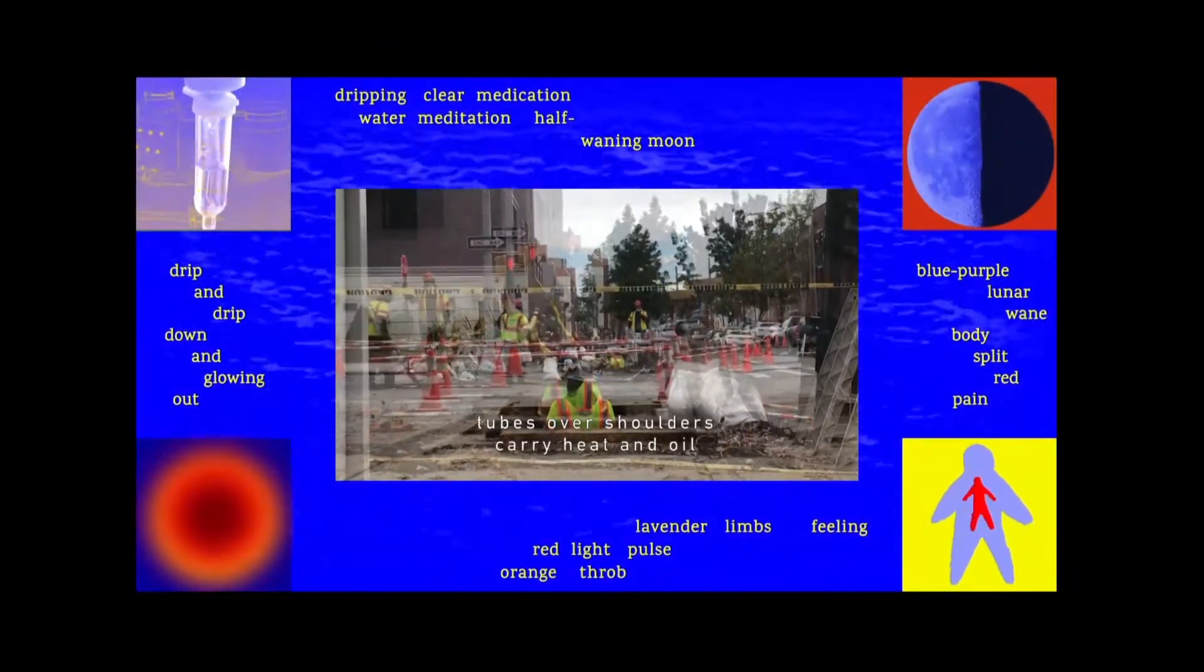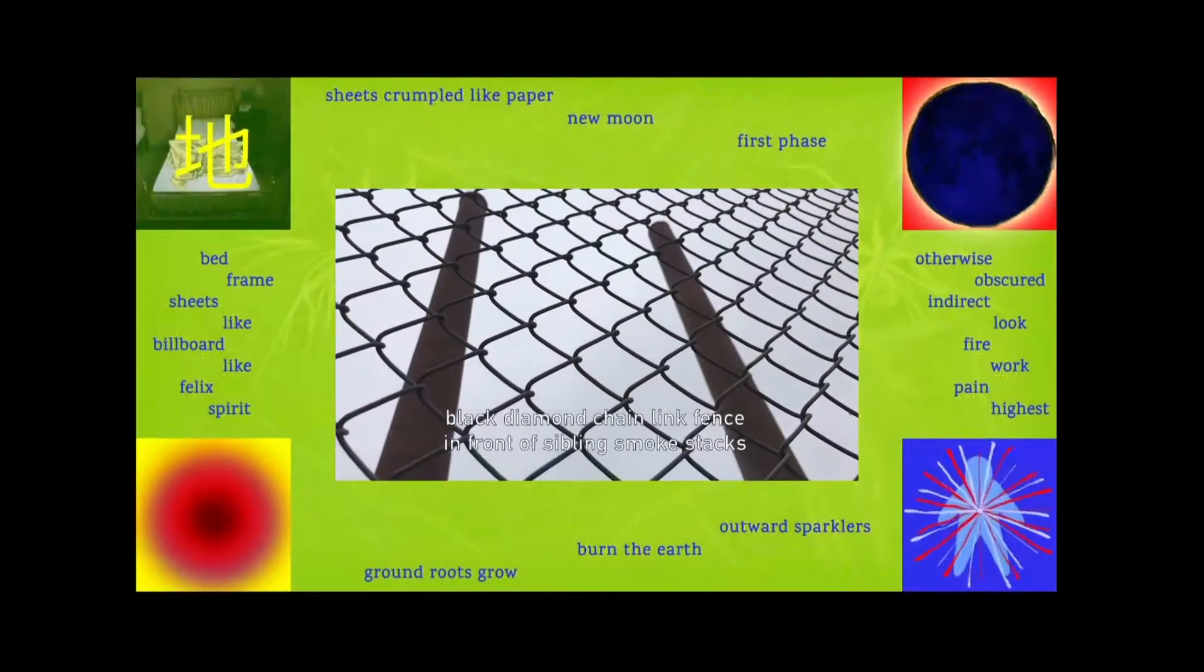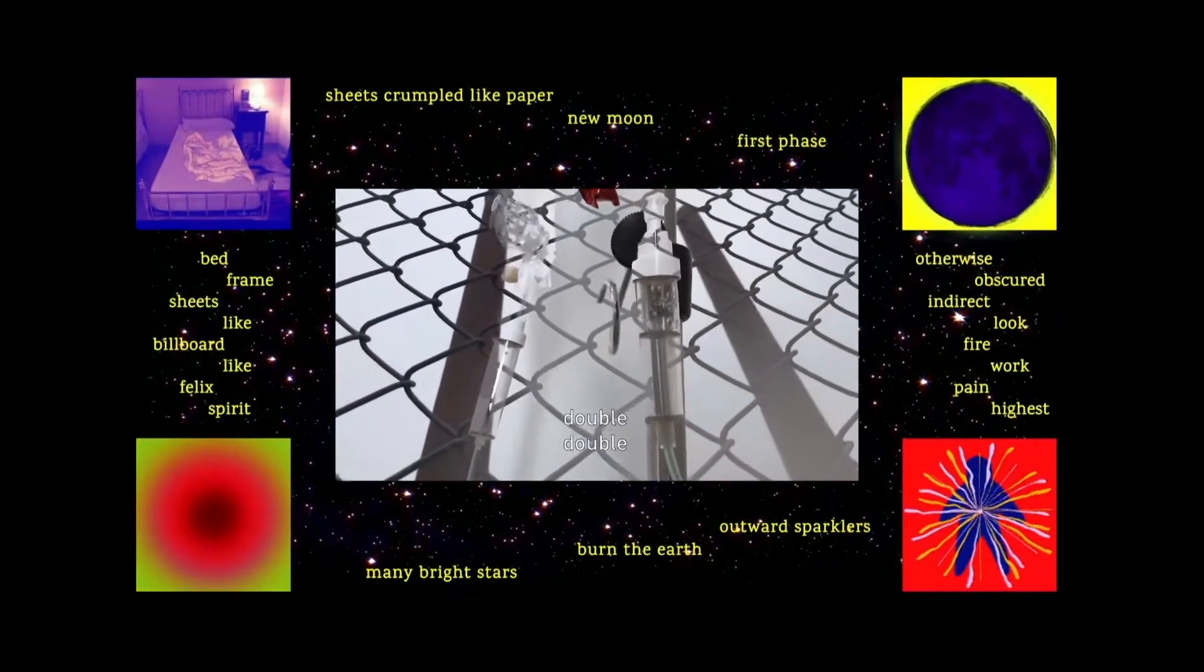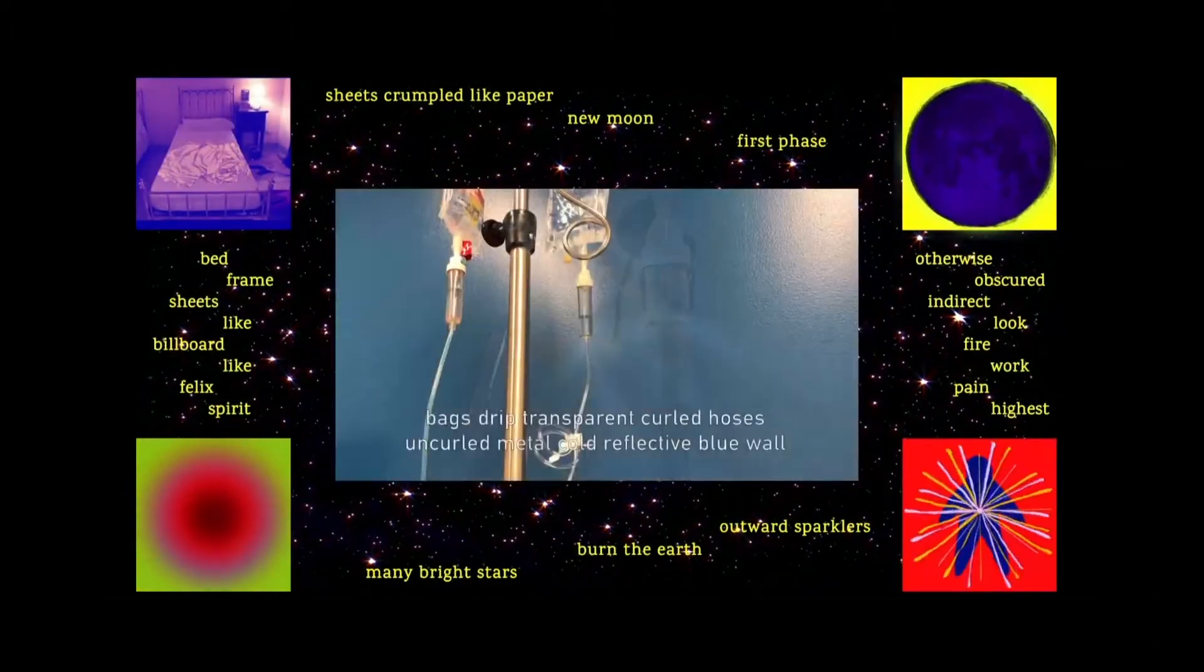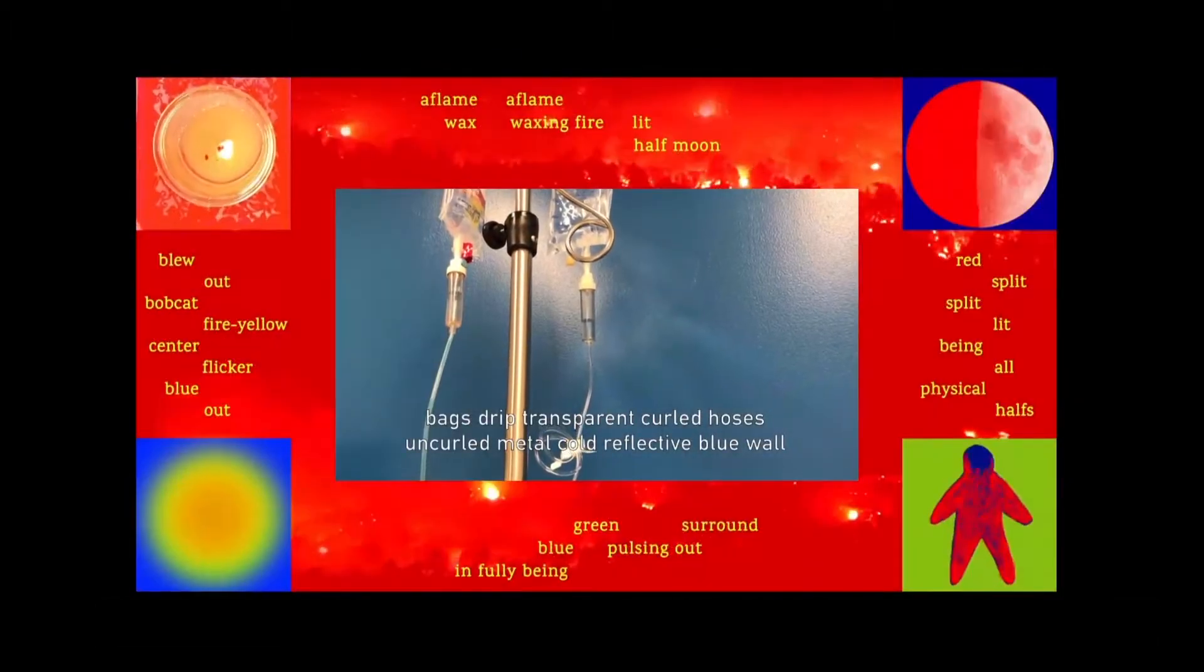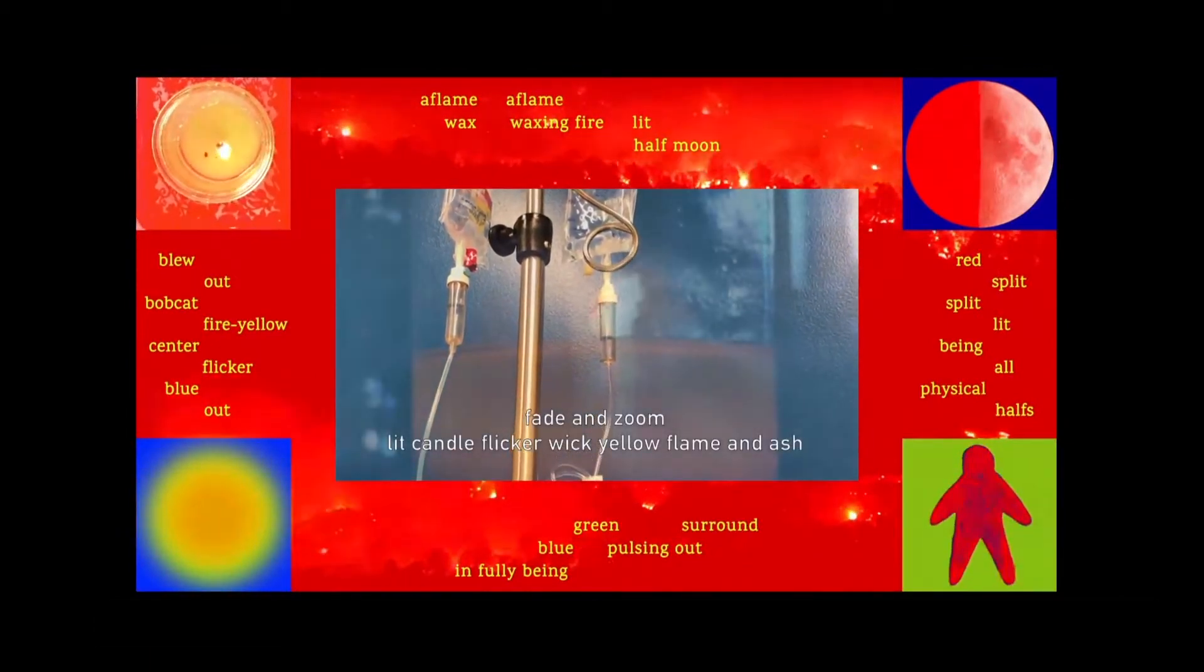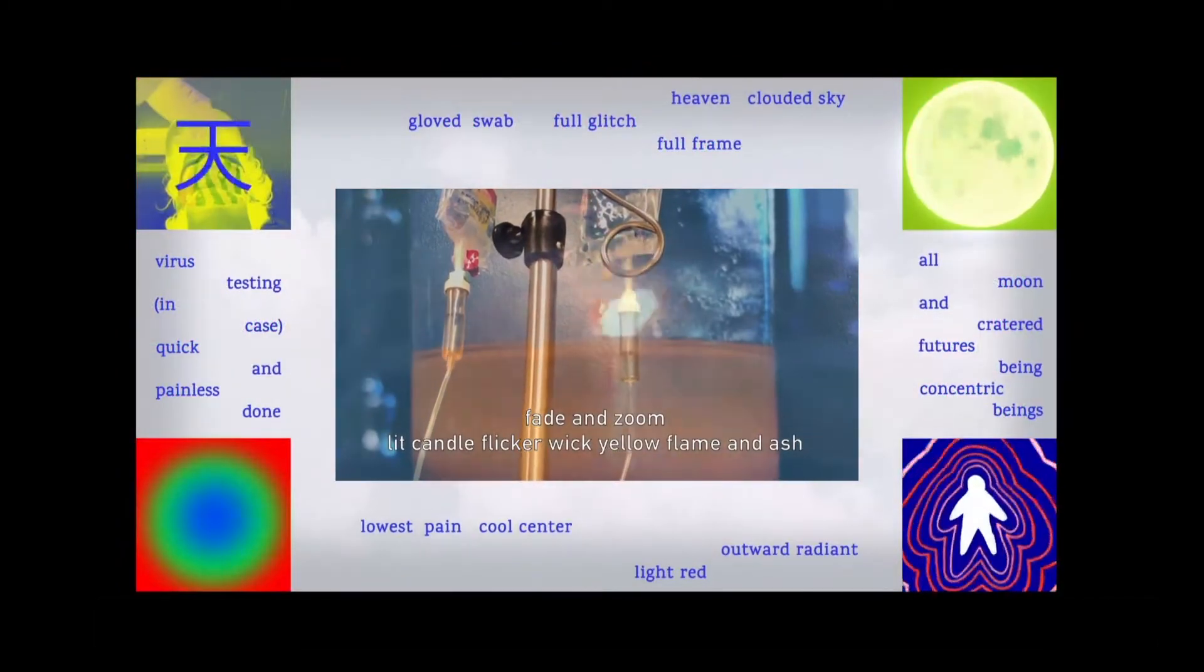Tubes over shoulders carry heat and oil. Black diamond chain link fence in front of sibling smokestacks. Double, double. Bags drip transparent, curled hoses, uncurled metal, cold reflective blue wall. Fade and zoom, lit candle, flicker wick, yellow flame and ash.